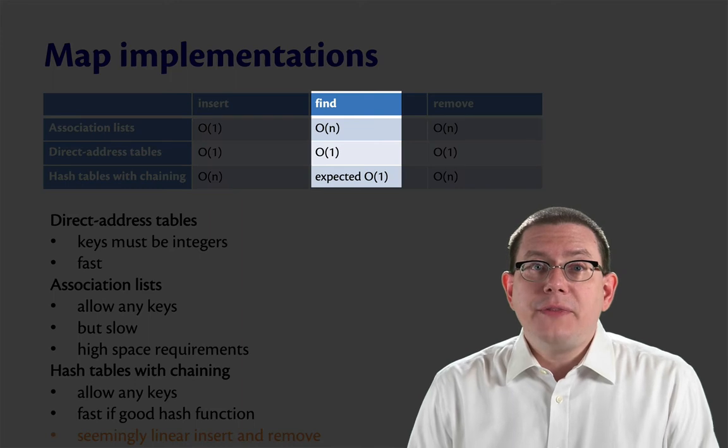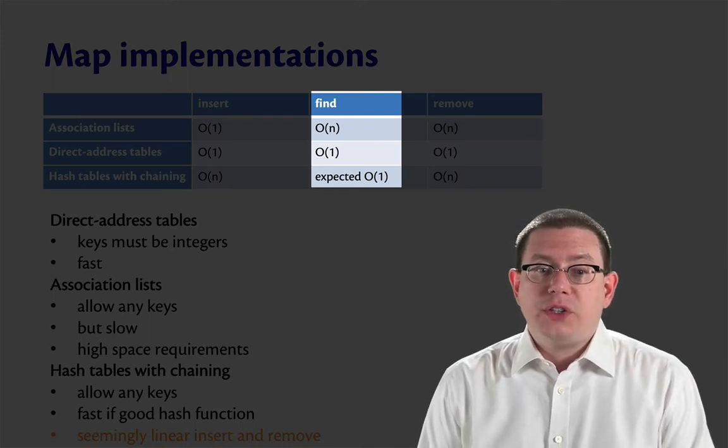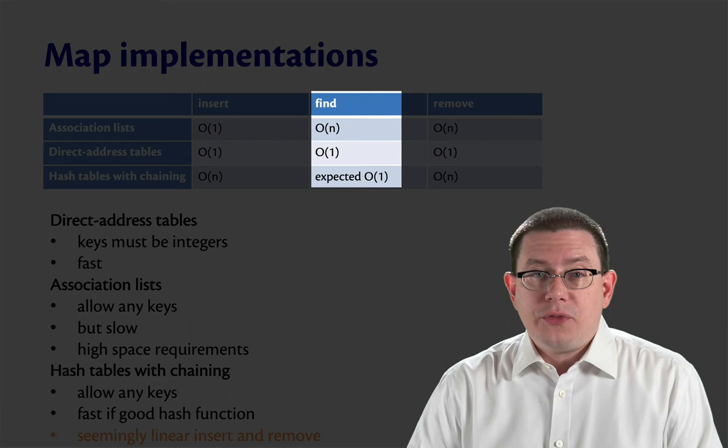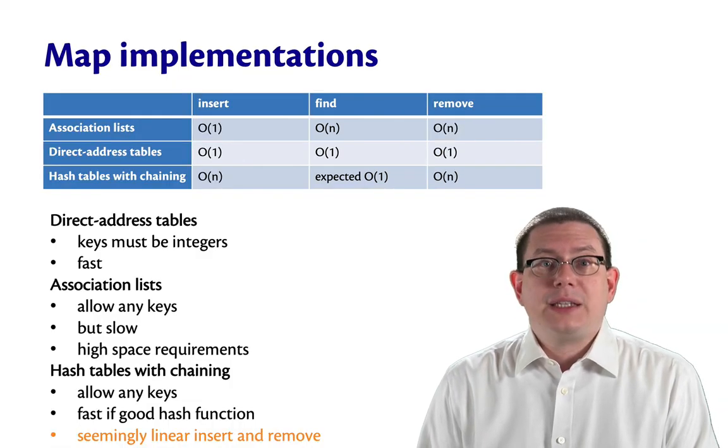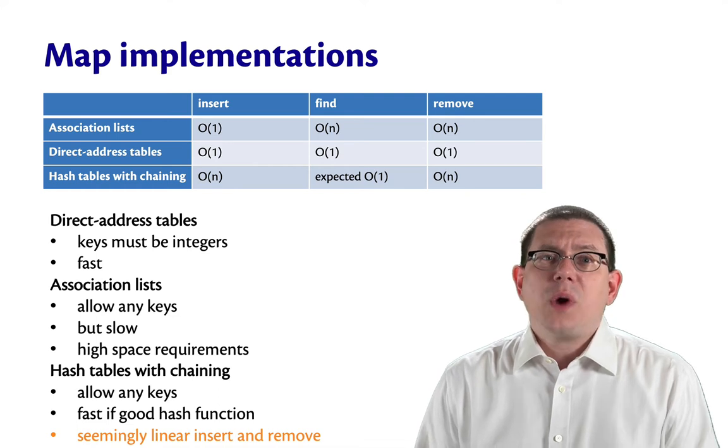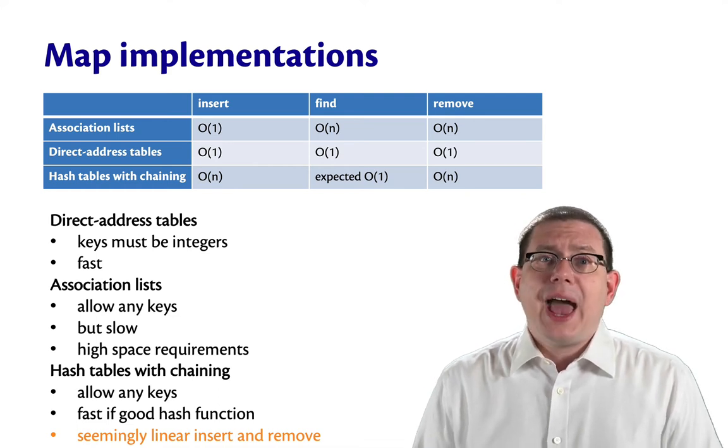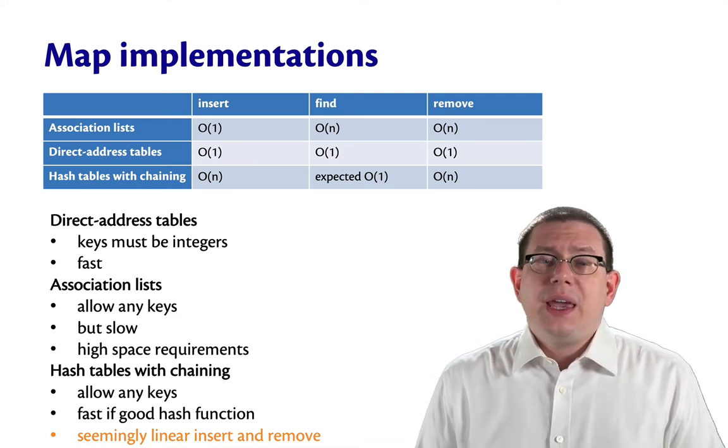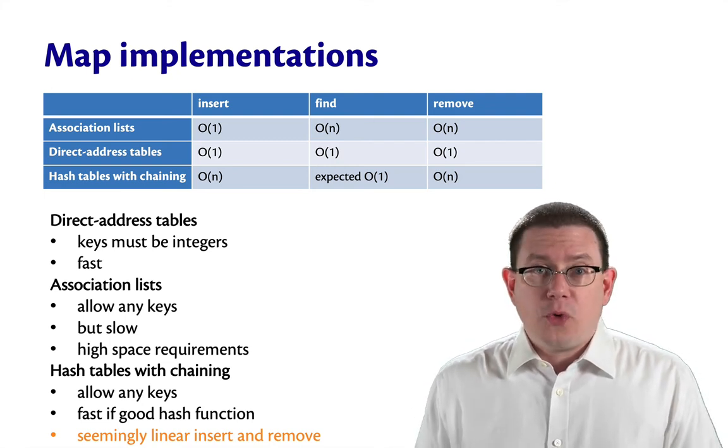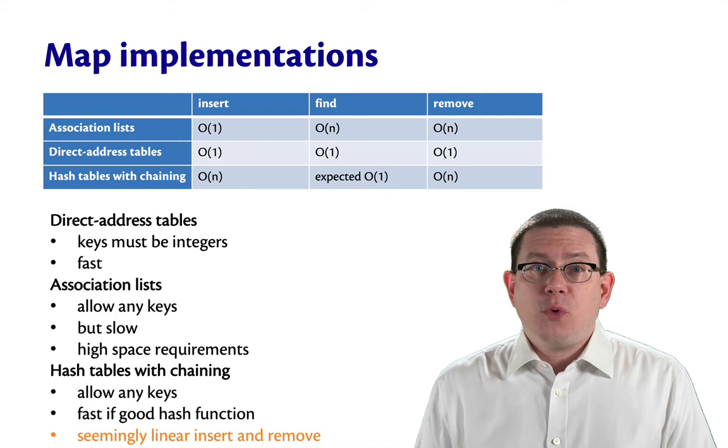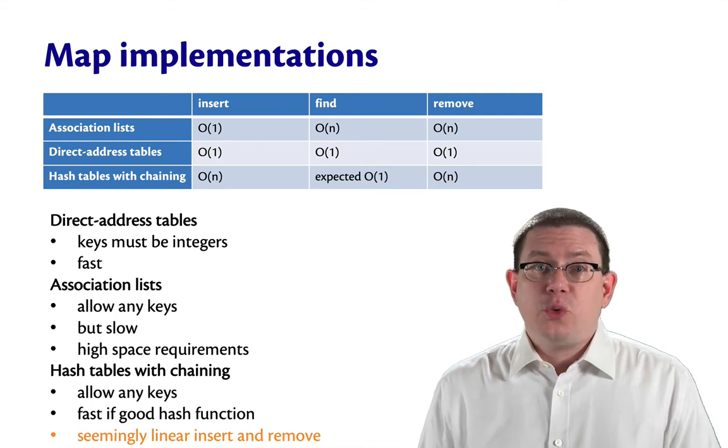The benefit of hash tables with chaining over association lists is that we have a more efficient find operation. Instead of linear time, we have expected constant time, where I have to say expected because of the hash function that's in use. In expectation, a good hash function will distribute keys uniformly over the buckets and therefore keep the expected bucket length to a constant.